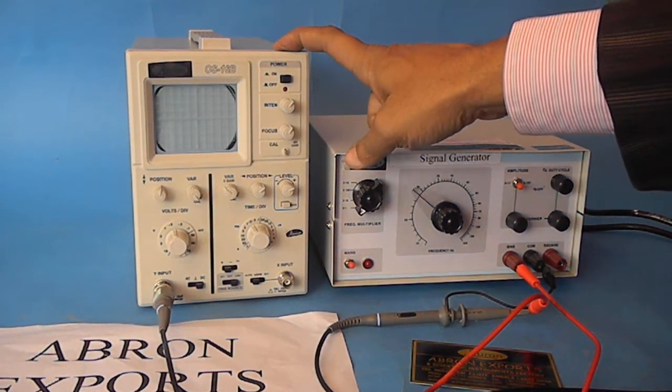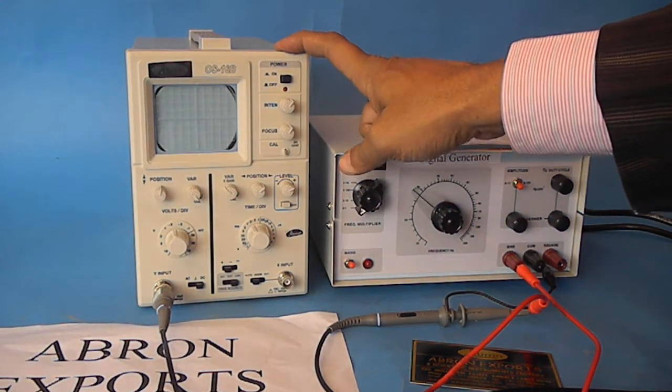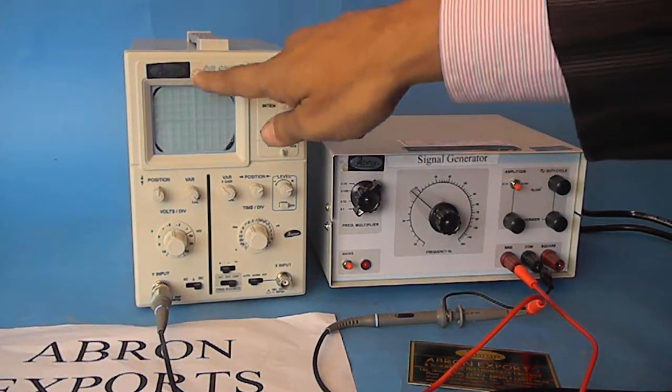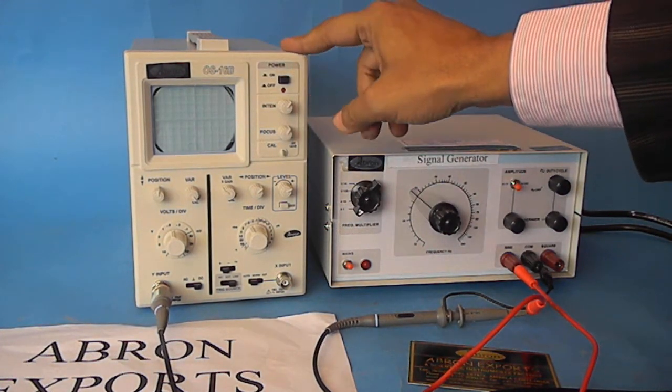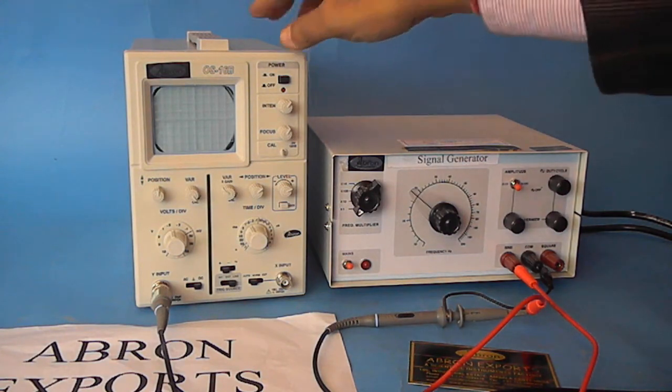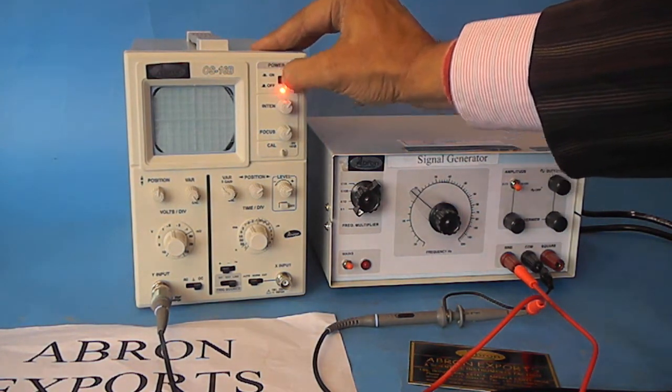This is the CRO, cathode ray oscilloscope for testing instruments by Abron Exports. First, you have to connect the power supply main current on the back and then switch it on.